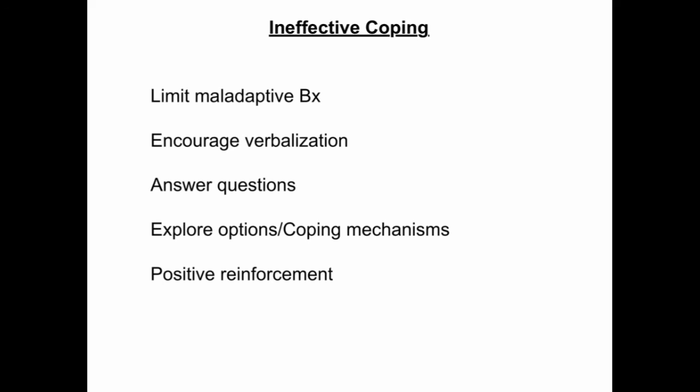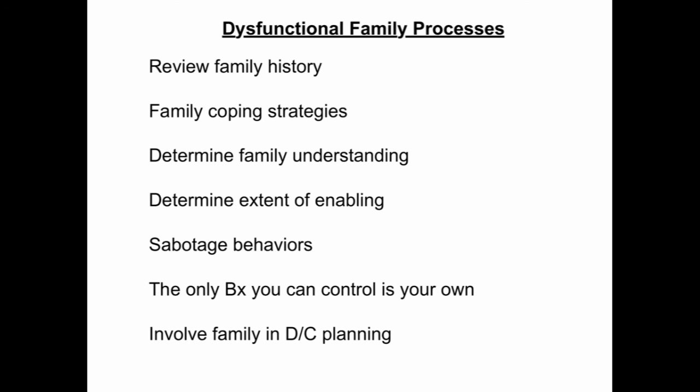For the diagnosis of dysfunctional family processes, review the family history, explore roles of family members, circumstances involving alcohol use, strengths, and areas of growth. Explore how family members have coped with the patient's addiction through denial, repression, rationalization, hurt, loneliness, or projection. Determine the family's understanding of the situation and assess family member functioning. Determine the extent of enabling behaviors and discuss addictive disease characteristics for both user and non-user. Identify and discuss the possibility of sabotage behaviors by family members, including secondary gain and role change. Assist partners in understanding that the only behavior they can control is their own, and involve family members in discharge planning.